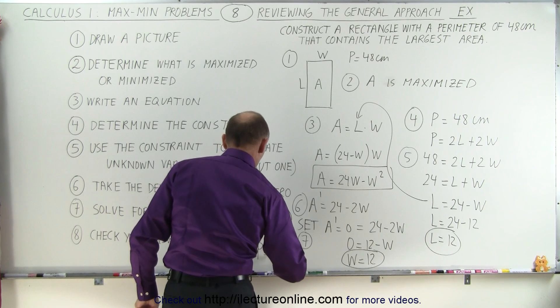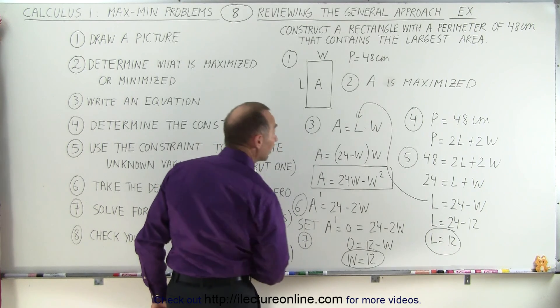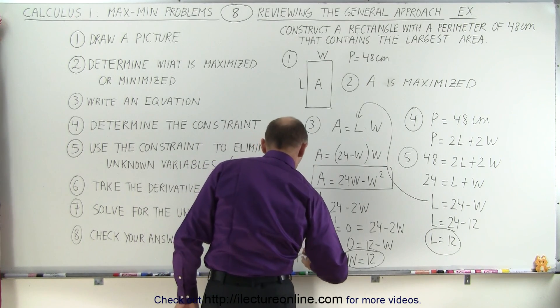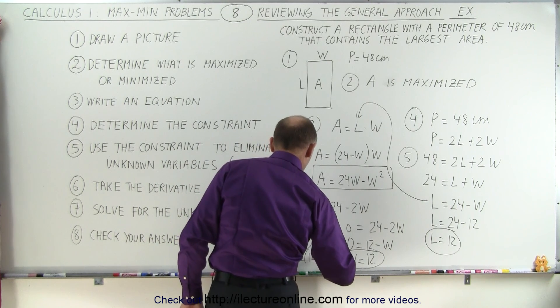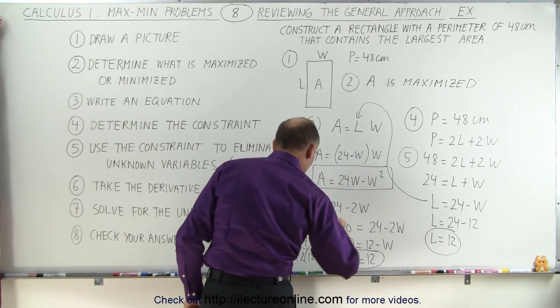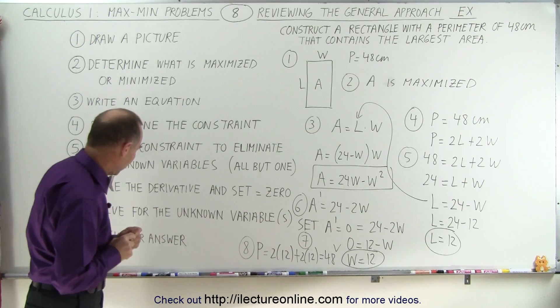The perimeter is going to be 2 times 12 for the length plus 2 times 12 for the width, and yes indeed it does add up to 48, in this case 48 centimeters.